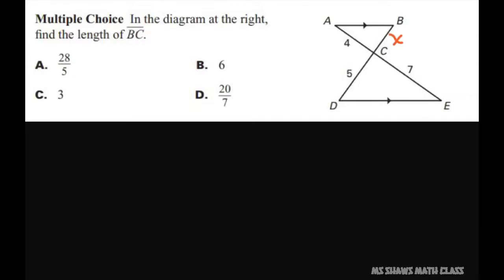Now based off that we have parallel lines here, I know that angle E is congruent to angle A due to your alternate interior angles theorem, and that has to do with these are parallel lines. So angle E is congruent to angle A, and also angle B is congruent to angle D.